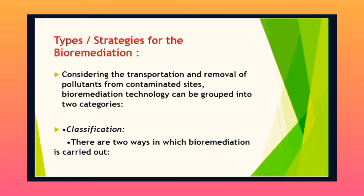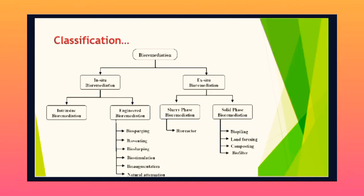There are two ways in which bioremediation is carried out, and both in-situ and ex-situ are subdivided into further types. The types of in-situ bioremediation are: first, intrinsic bioremediation, and second, engineered bioremediation. In engineered bioremediation, we will discuss important terms such as bio-sparging, bio-venting, bio-slurping, bio-stimulation, bio-augmentation, and natural attenuation.